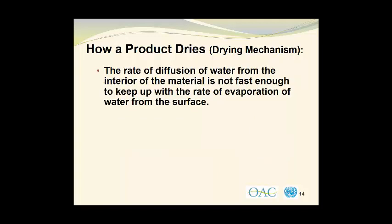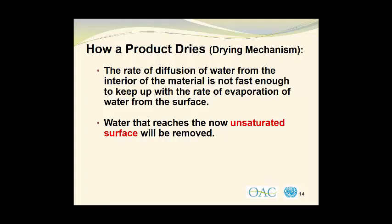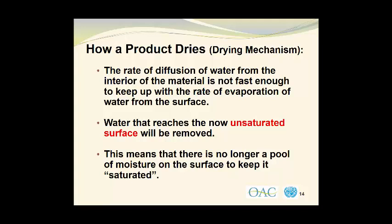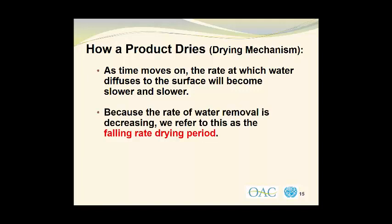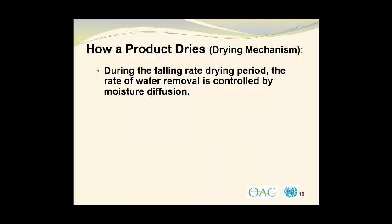The rate of diffusion of water from the interior of the material is not fast enough to keep up with the rate of evaporation from the surface. Water that reaches the now unsaturated surface will be removed, meaning there is no longer a pool of moisture to keep it saturated. As time moves on, the rate at which water diffuses to the surface becomes slower and slower. Because the rate of water removal is decreasing, we refer to this as the falling-rate drying period.